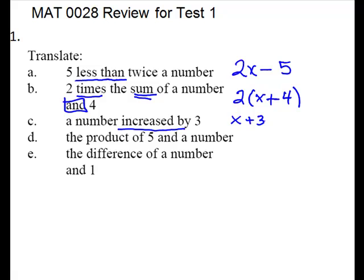Fourth one. The product of 5 and a number. Product is your keyword. It means multiplication. And is your separator. So you have 5 times a number or just 5x is more compact.